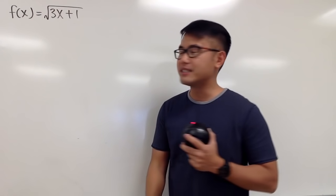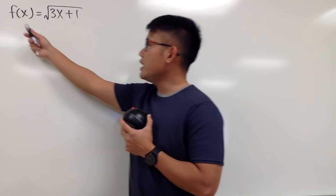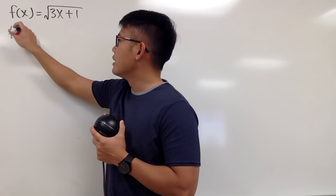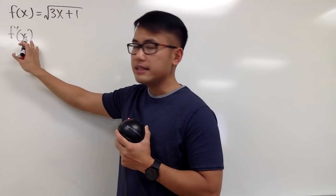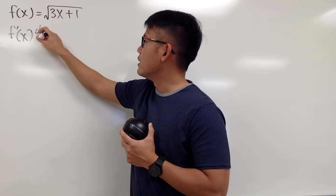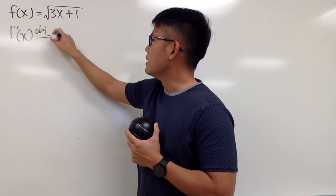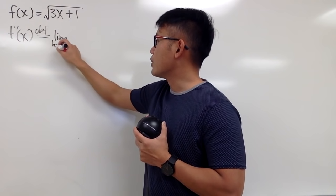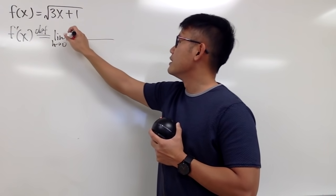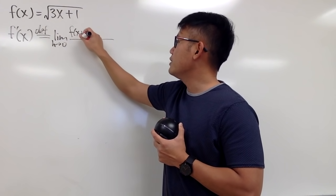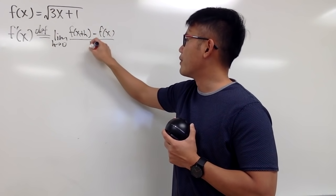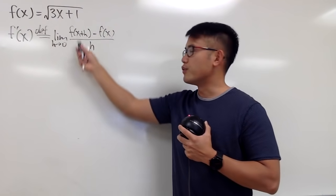Let's focus on the definition of derivative first. We're given f equal to this, therefore by definition, f prime is the limit as h goes to 0. We have to remember what goes on right here: this is f(x+h) minus f(x), all over h — namely a difference quotient.